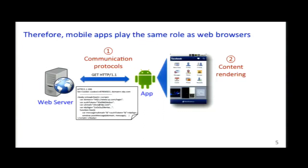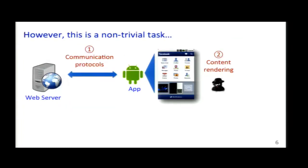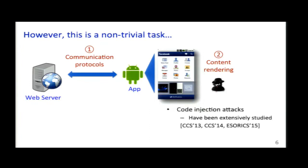In these scenarios, let's look at how mobile applications work. Essentially, the mobile application runs like a web browser: it first uses some communication protocols to fetch content from the web server, and then does some content rendering. However, if we look at the multiple vulnerabilities in the web browser, we can understand this is a very hard and complicated task. On the content rendering side, there may be code injection attacks, where an attacker can inject malicious code into the content fetched by the web application, leading to cross-site scripting and injection attacks.